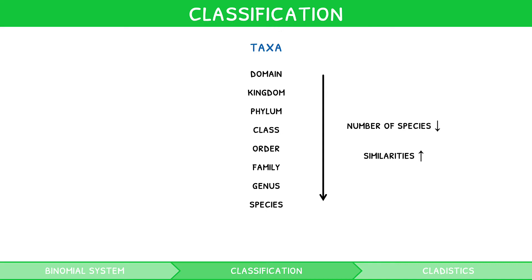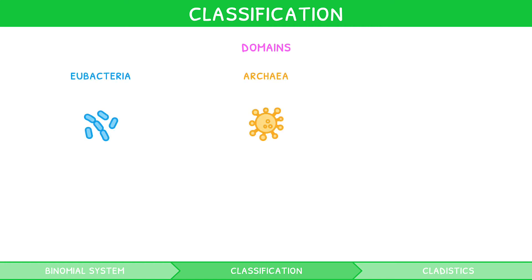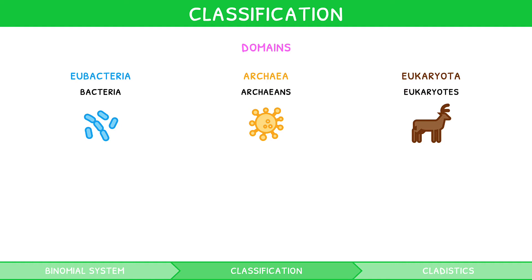However, you must know much more detail on these taxa. There are three main domains in which all organisms are classified: Eubacteria, Archaea, and Eukaryota. The members of these groups are called bacteria, archaeans, and eukaryotes, respectively.